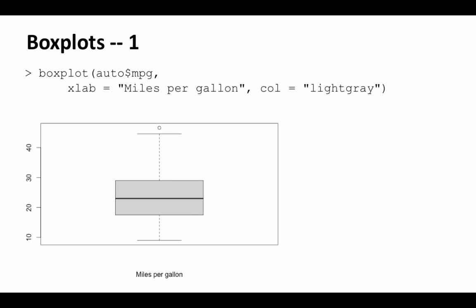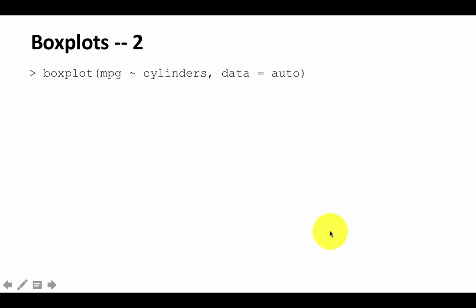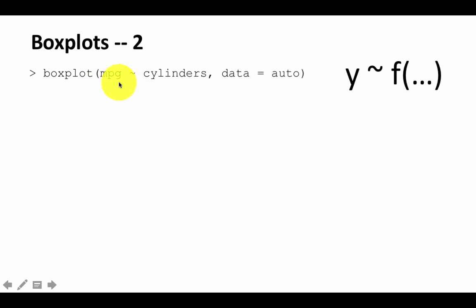One of Tufte's principles of visualization is to show comparisons. Box plots are great for this. Here we use boxplot(mpg ~ cylinders, data=auto). This is a formula expression — you can read it as 'mpg as a function of cylinders.' Whatever is on the right-hand side of the tilde appears on the x-axis, and whatever is on the left appears on the y-axis.